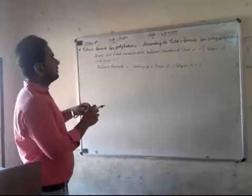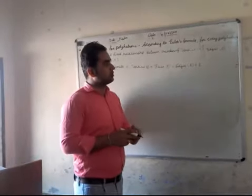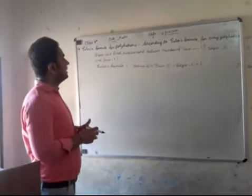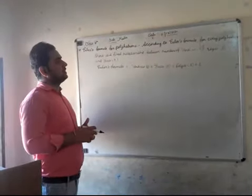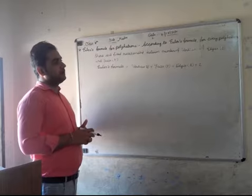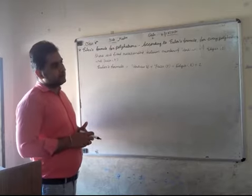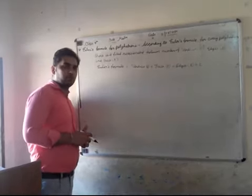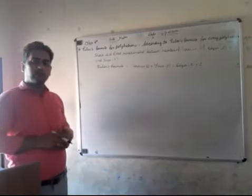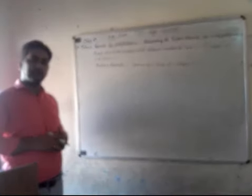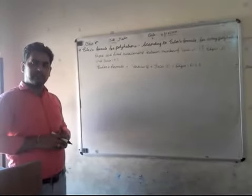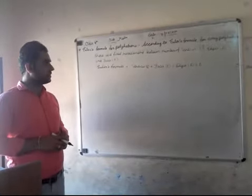Euler's Formula for polyhedra: according to Euler's Formula, for every polyhedron there is a fixed relationship between the number of vertices, edges, and faces. Meaning, if you have any polyhedron, there is always a relationship between number of faces, edges, and vertices.